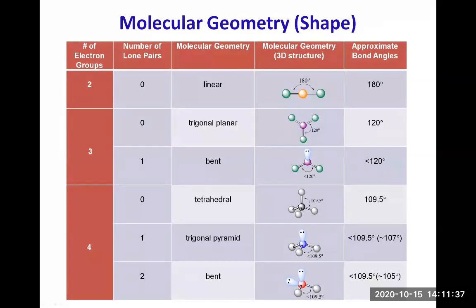The molecular geometry table is in a document titled 'Electronegativities and Molecular Geometries' in the chapter 14 module. To determine molecular shape, look at the central atom and count the number of electron groups around it. Two electron groups with no lone pairs gives a linear shape. Three electron groups gives trigonal planar with no lone pairs or bent with one lone pair. Four electron groups gives tetrahedral with zero lone pairs, trigonal pyramidal with one lone pair, or bent with two lone pairs.